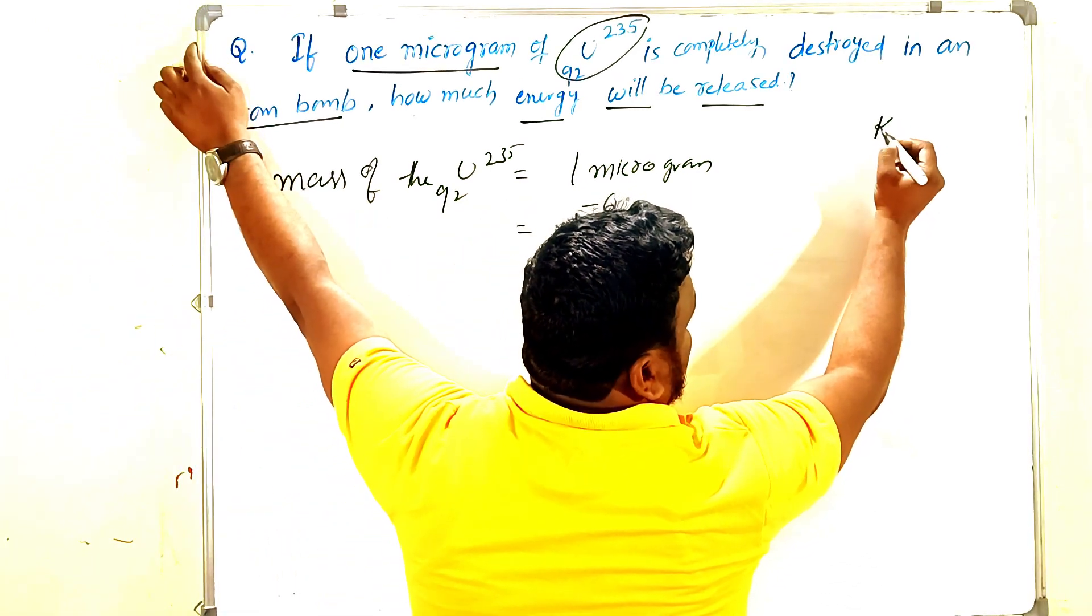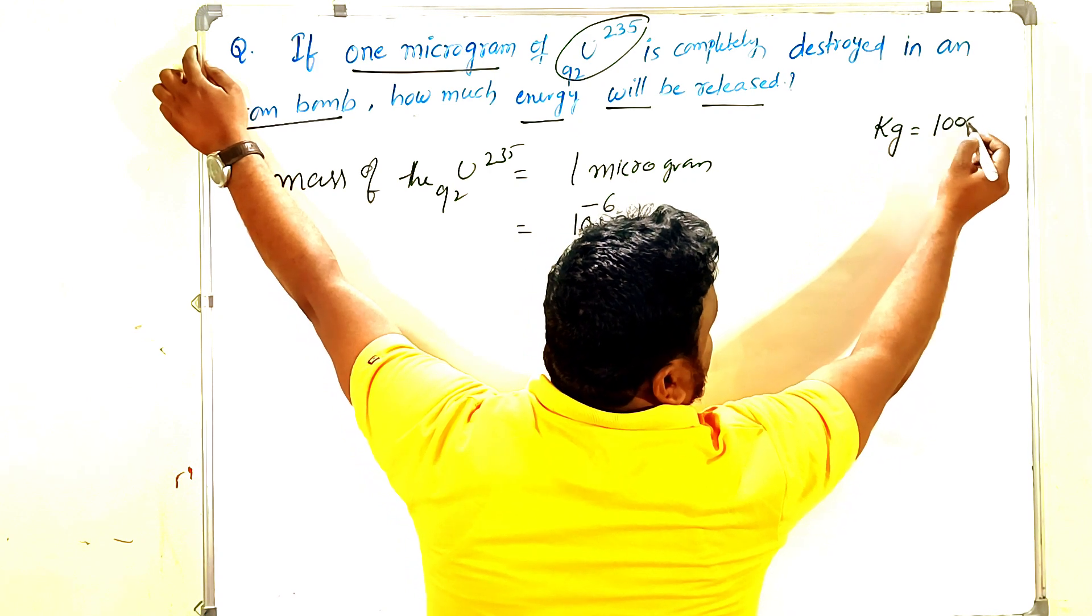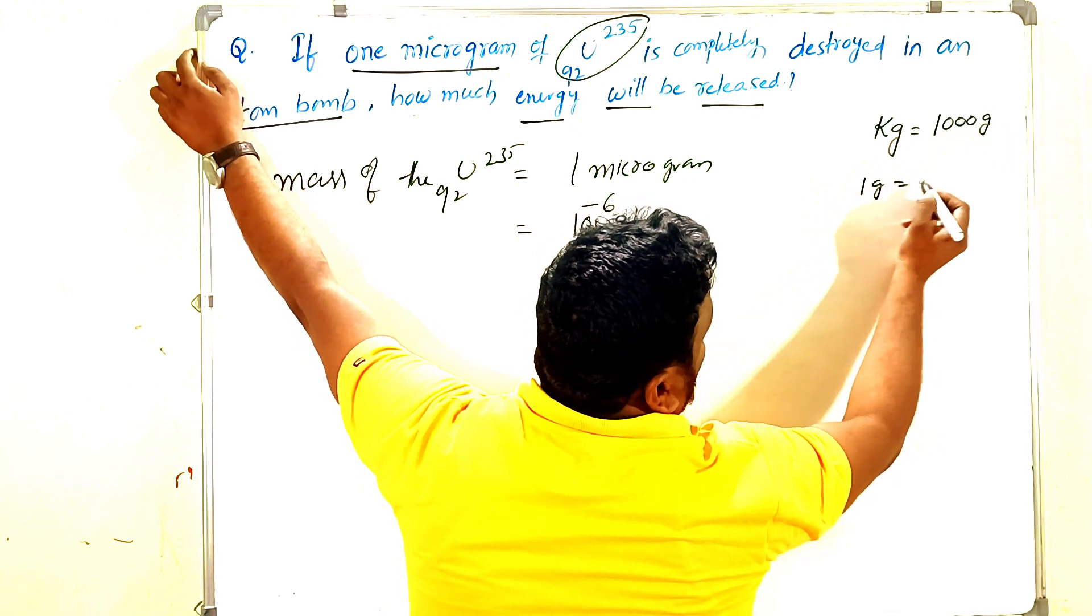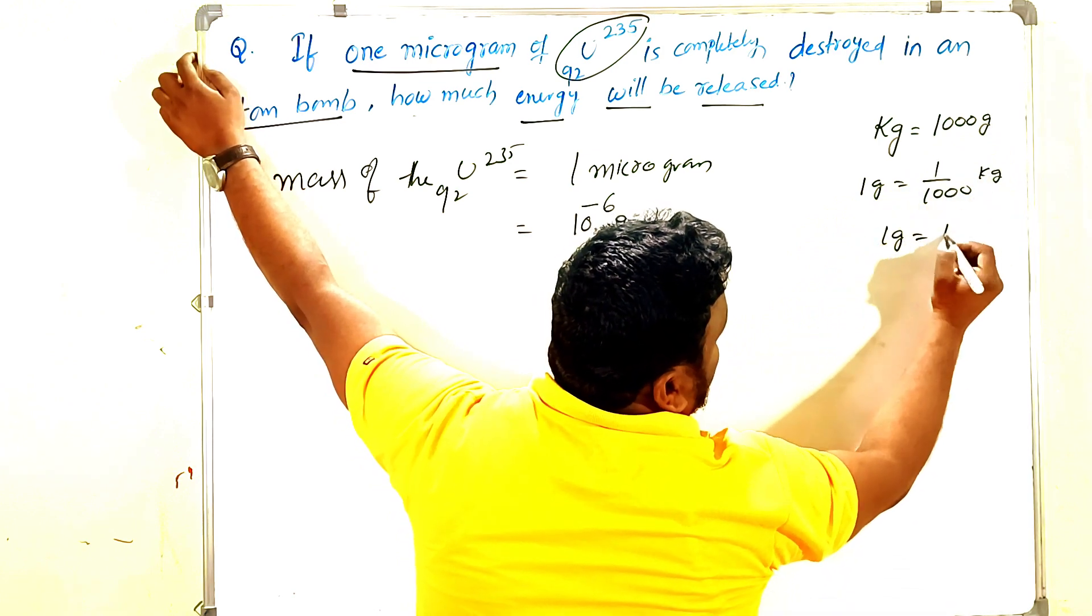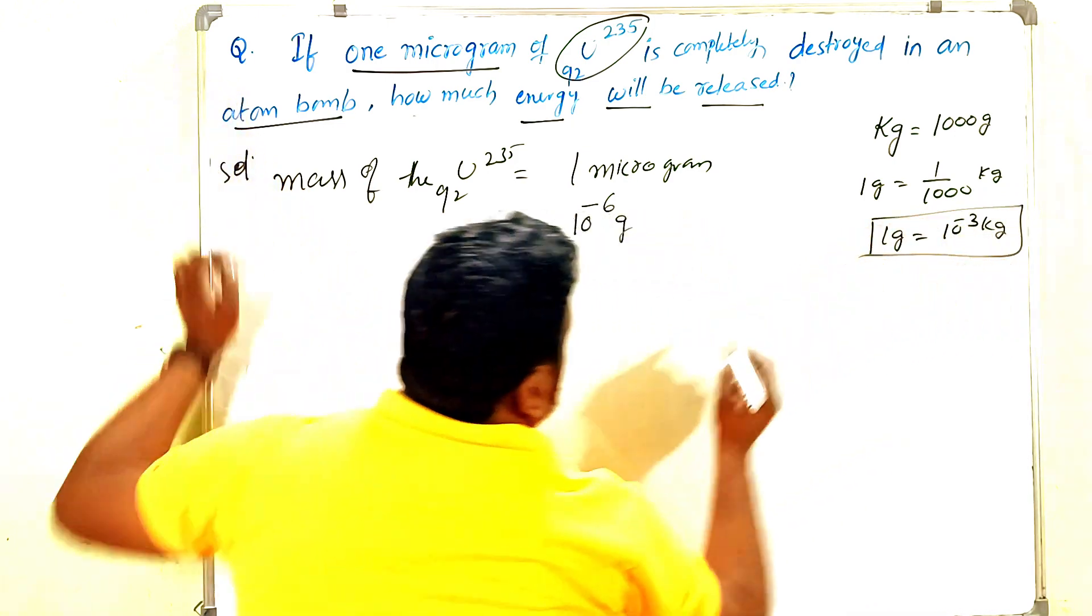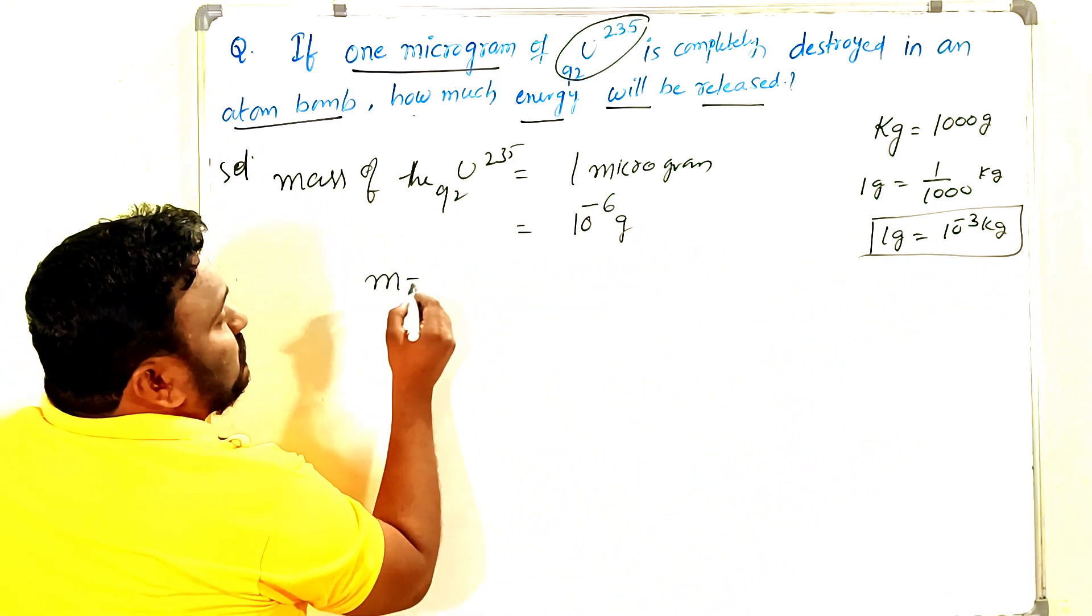We have to convert from grams to kg. One kg equals how many grams? Thousand grams. Then one gram is equal to one by thousand kg, that means one gram equals 10 power of minus three kg. So mass is equal to 10 power of minus six grams.